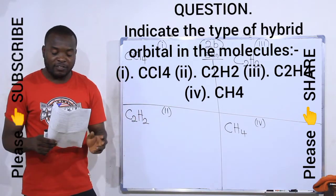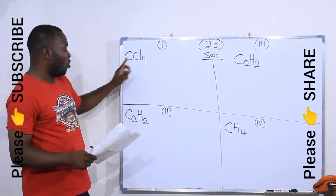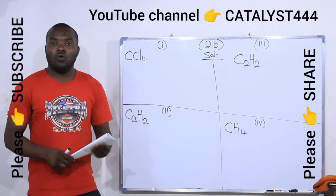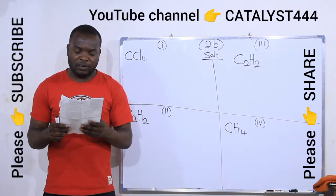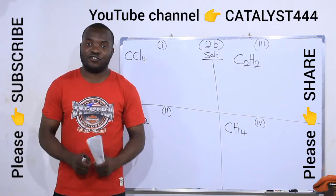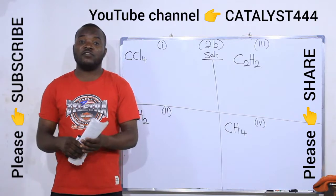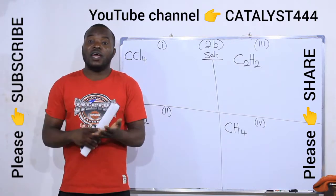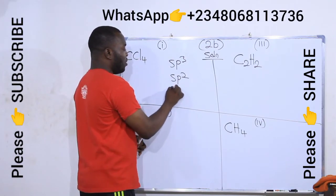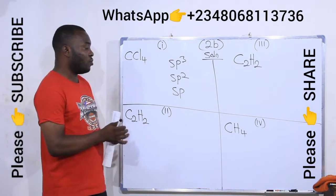Now we are solving question 2b. The question says: indicate the type of hybrid orbital in the molecules CCl4, C2H2, C2H4, and CH4. When you are asked to indicate the type of hybrid orbital present in a molecule, it means you should tell us the type of hybridization present in that molecule. At this level, the types of hybridization are SP3, SP2, and SP.